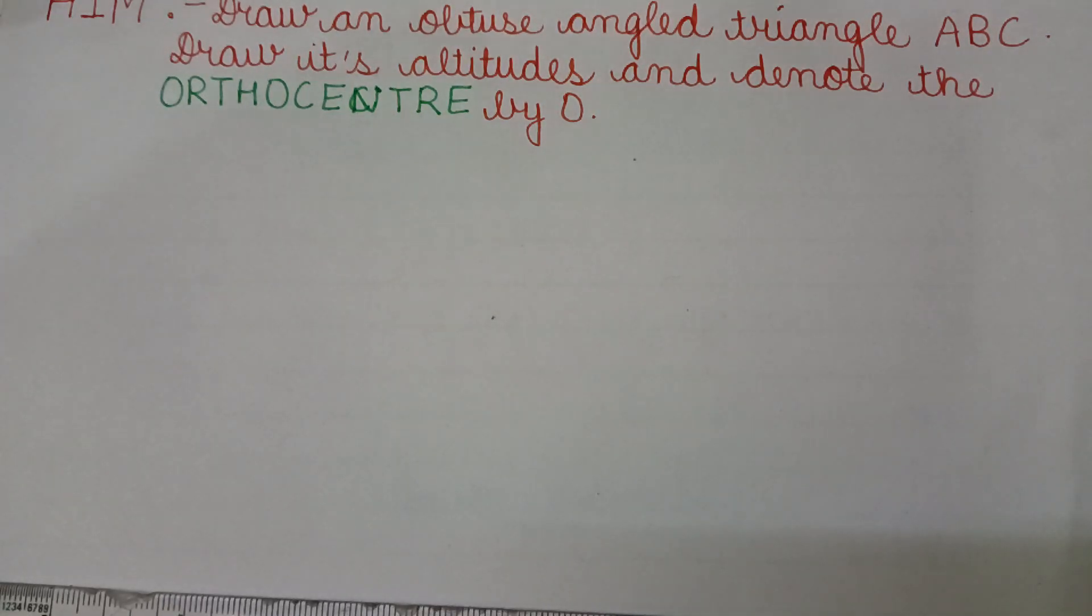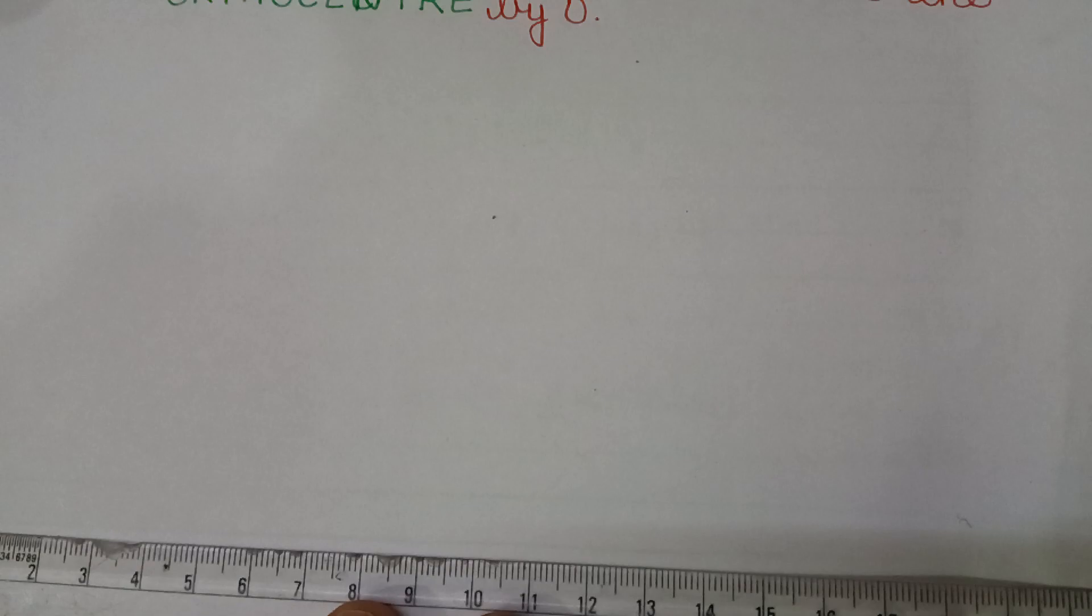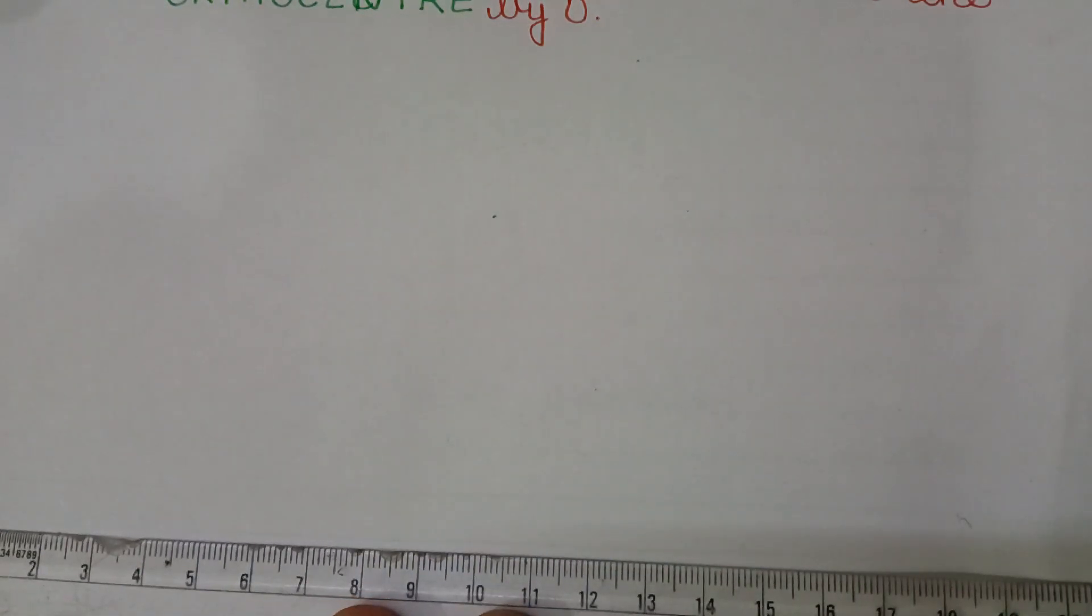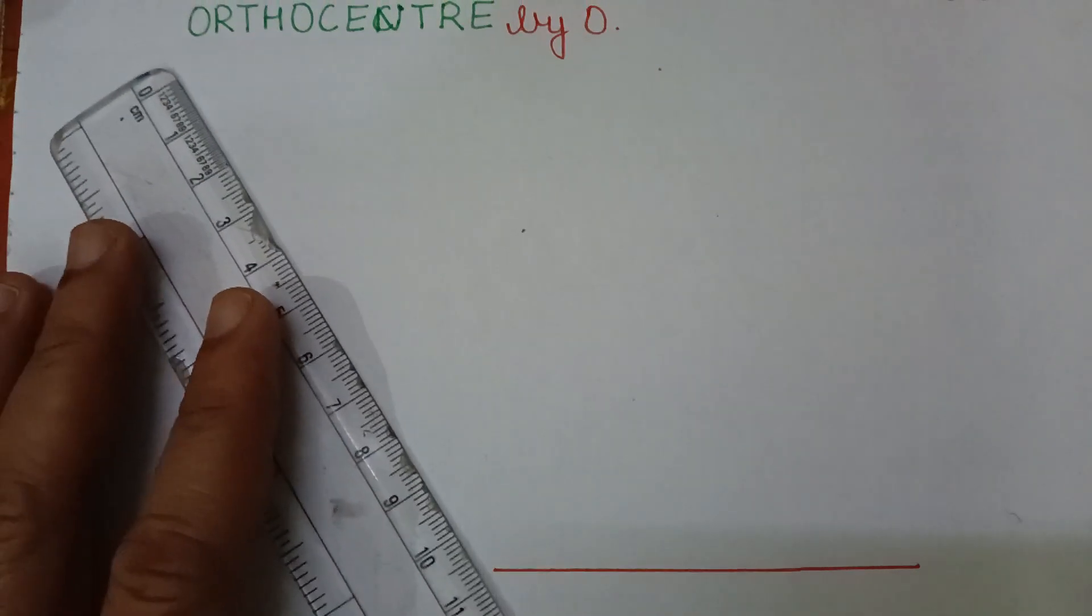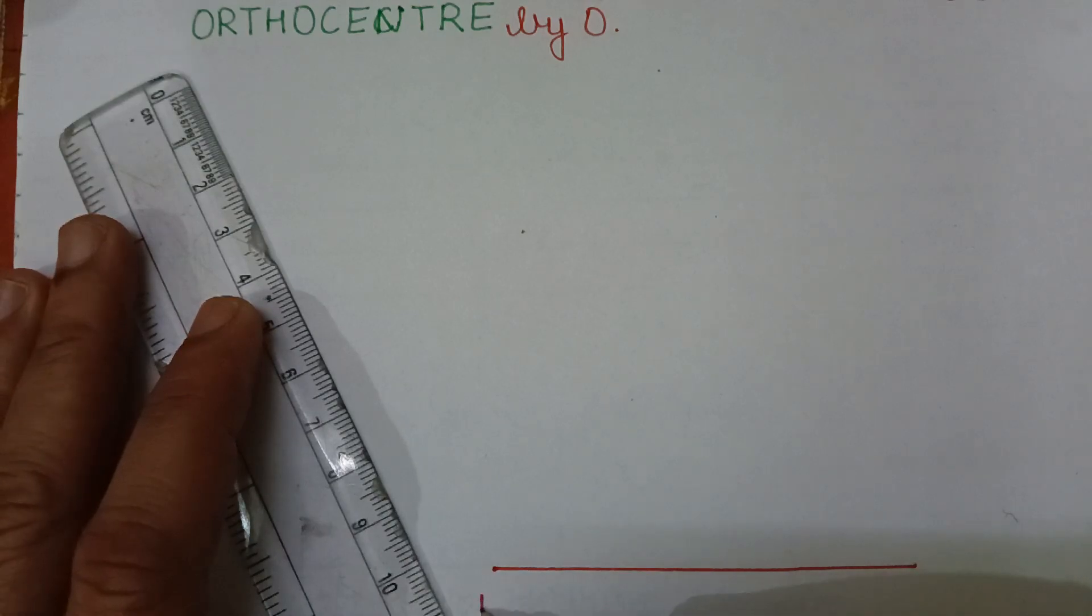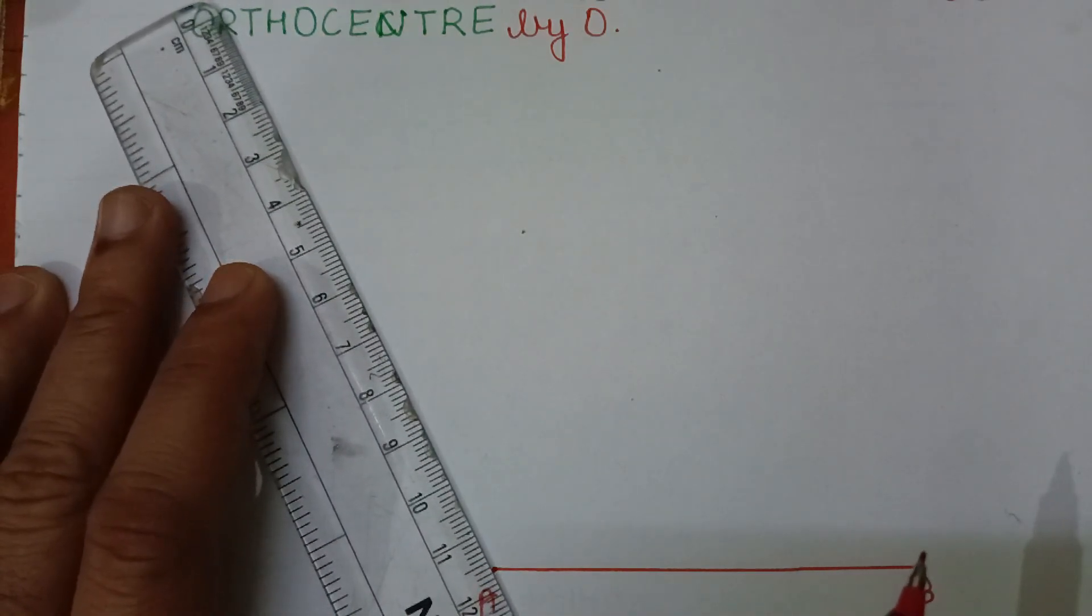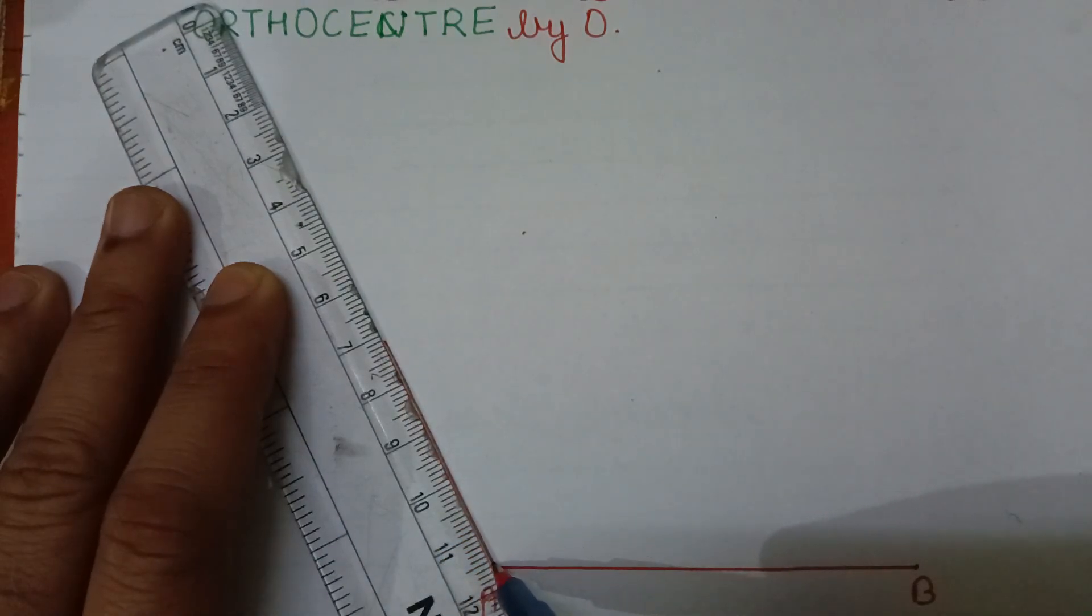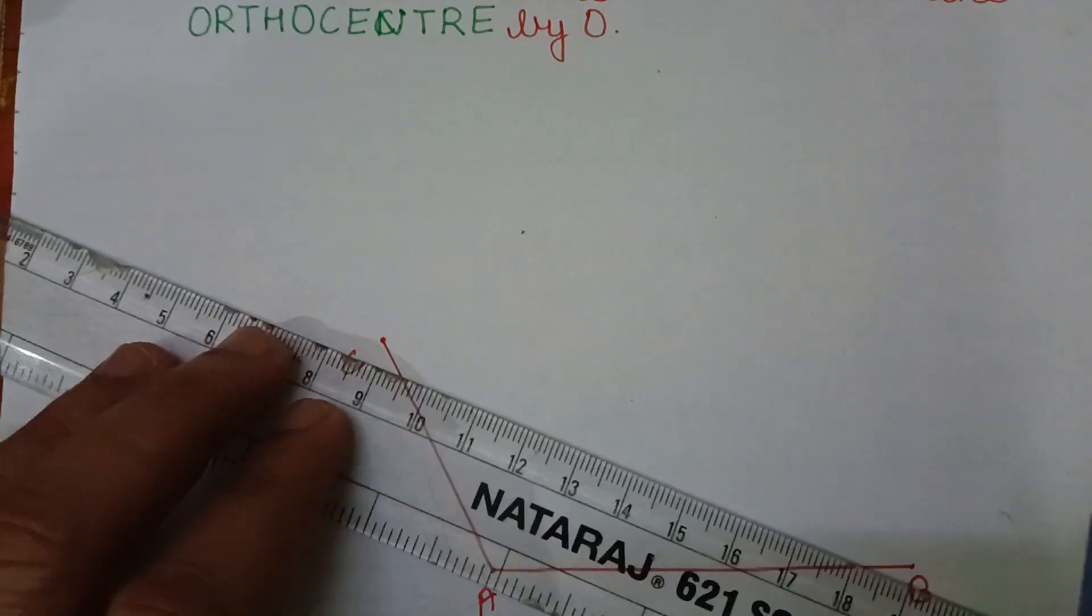First draw the obtuse angle triangle. You can take any measurement. We draw it here, first ABC. First we draw the side in this way. In obtuse angle, one angle is more than 90 degrees. We draw at here point A and B. This is B point. And at A, we draw the obtuse angle in this way. This angle is more than 90 degrees and join A to C here.